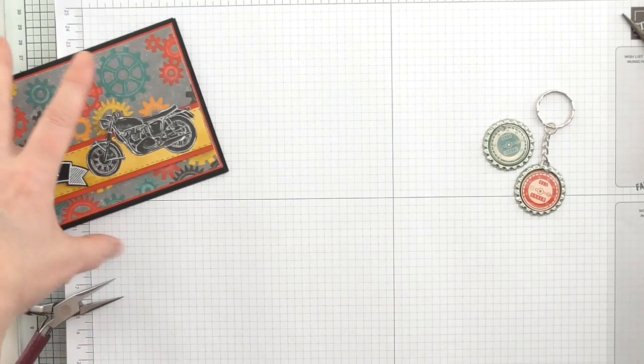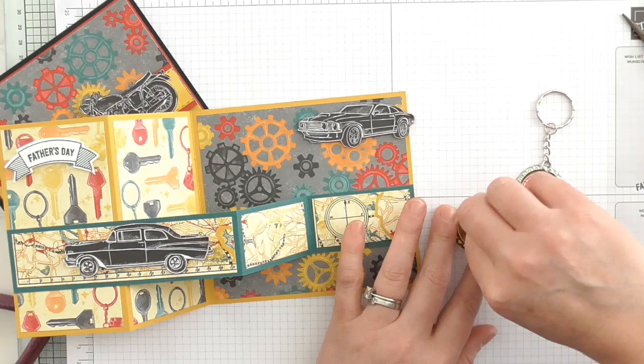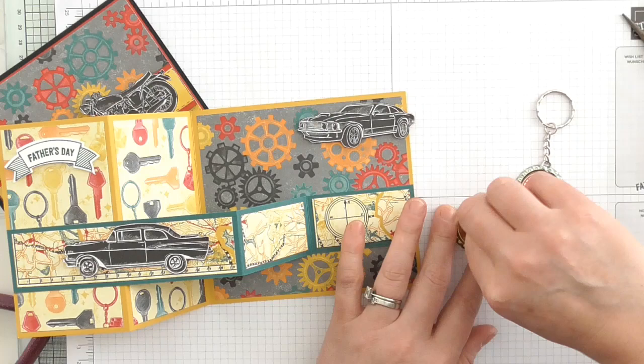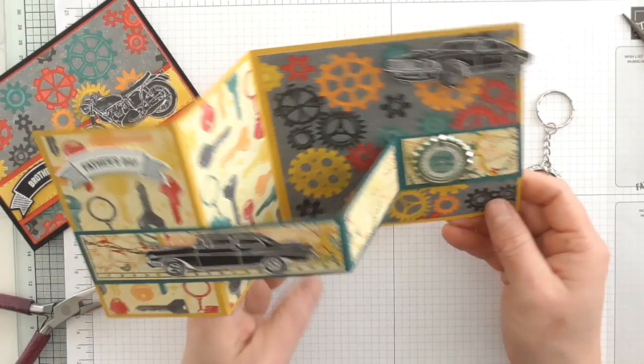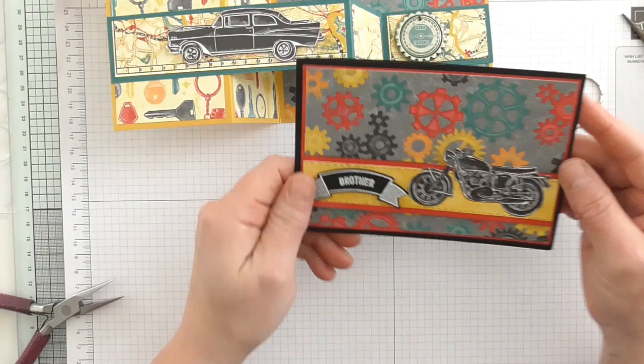I'm going to attach this one that I made earlier to my card. You could use thread if you don't have anything. I'm going to put a dimensional on the back and put it on there like that. How cool is that? I think that's awesome. I'm really impressed. So we've got a card, we've got a little keyring.